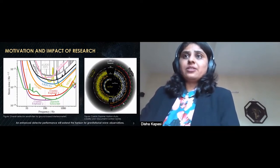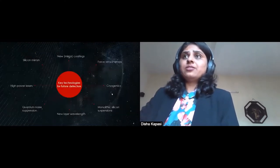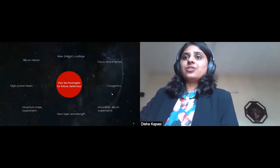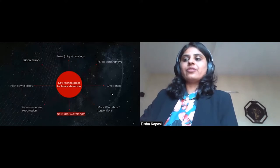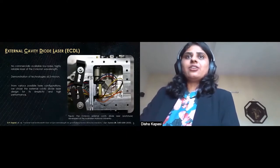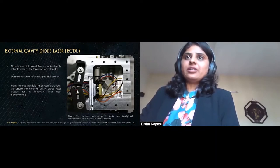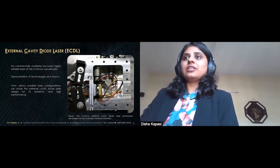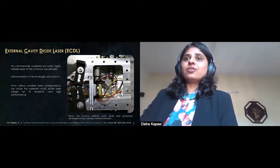However, before moving on to better detectors, we need to prototype and demonstrate technologies. Some of these are silicon mirrors, better coatings, cryogenics, monolithic silicon suspensions, high powered lasers, quantum noise suppression, and new laser wavelengths. I work on multiple technologies, but today we'll talk about a new laser wavelength. Some future detectors are expected to operate at the 2 micron wavelength. Currently we don't have a reliable low noise source at 2 micron wavelength to prototype all the other technologies. A stable source will help us demonstrate technologies in coatings, photodiodes, and quantum noise suppression. From the various laser configurations, we have chosen the external cavity diode laser for its simplicity and high performance.